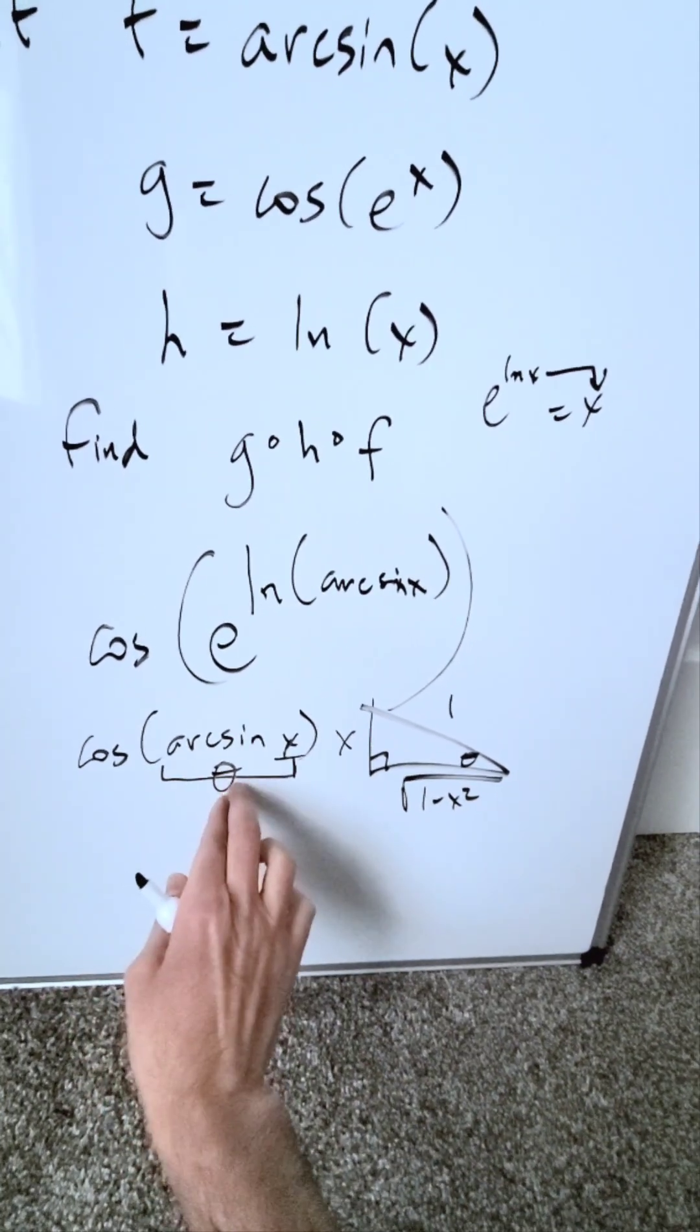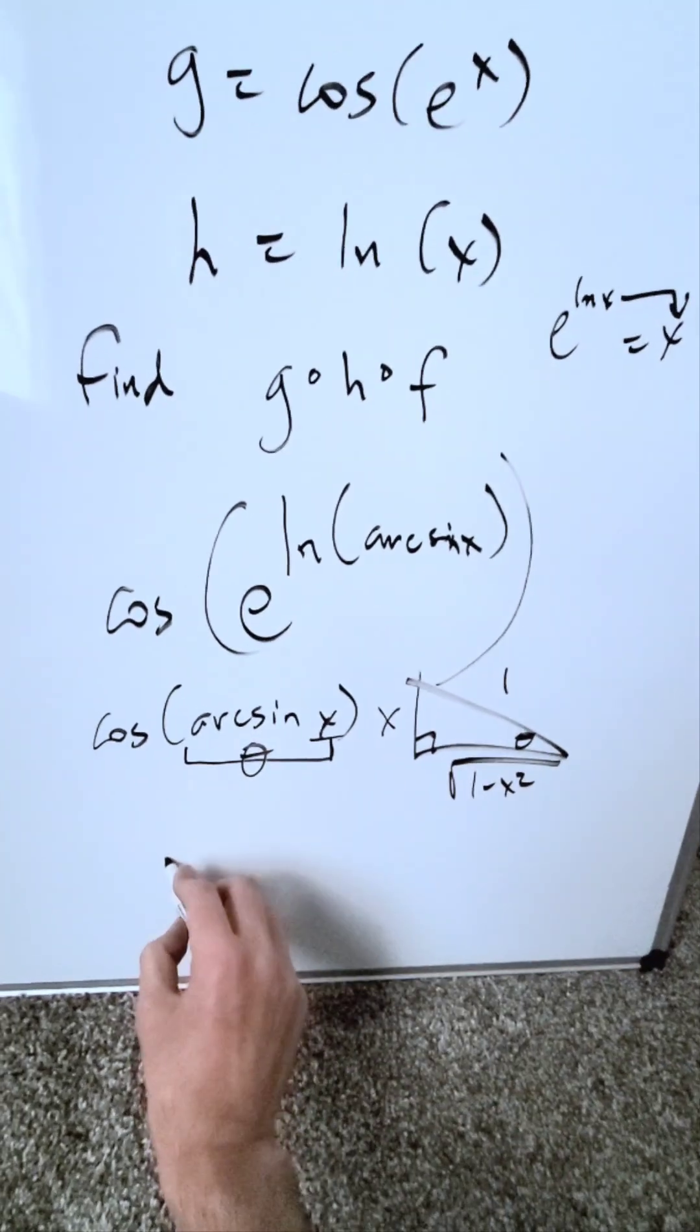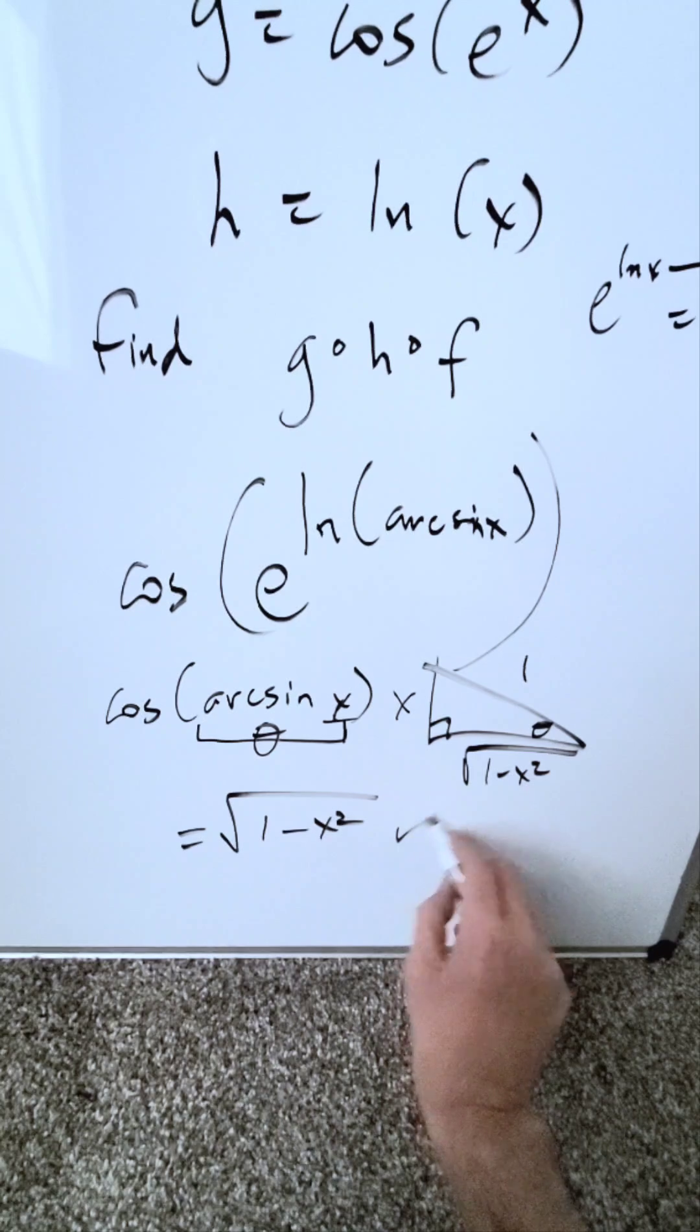Cosine of angle theta equals adjacent over hypotenuse. The end result is sqrt(1 - x²). This is the correct answer.